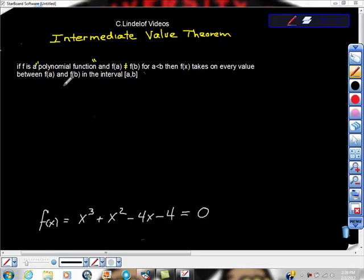It says if f is a polynomial function, then f of a is not equal to f of b. For a is less than b, then f of x takes on every value between f of a and f of b in the interval closed a, b. So that sounds terrible and actually doesn't sound like it makes any sense, but it's the simplest thing in the world.